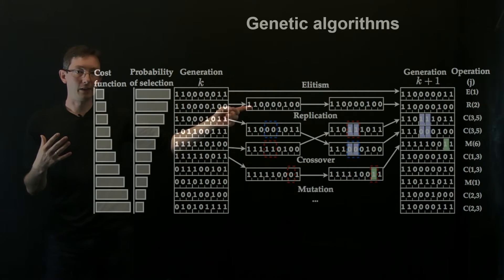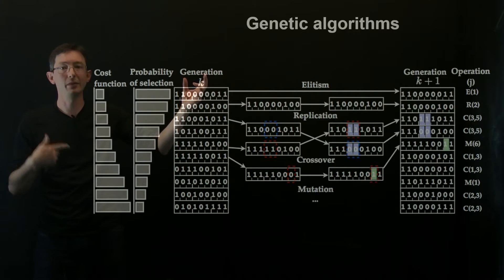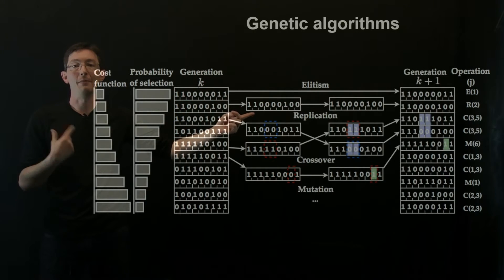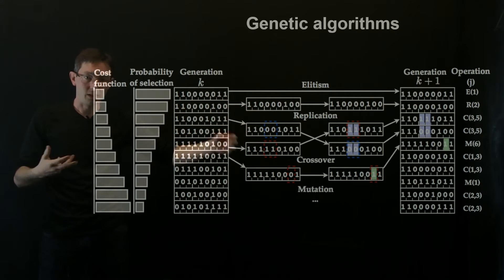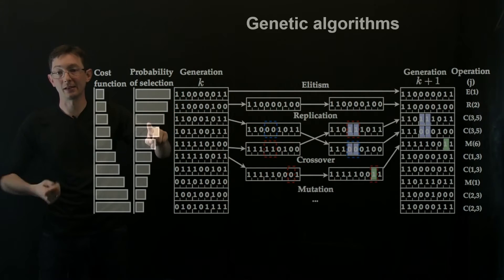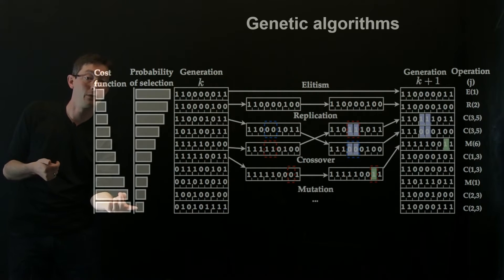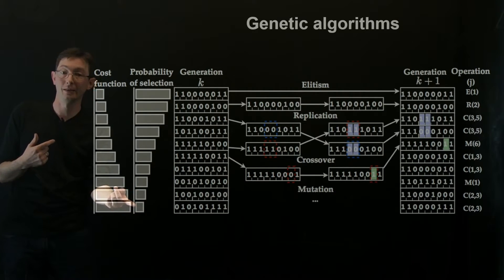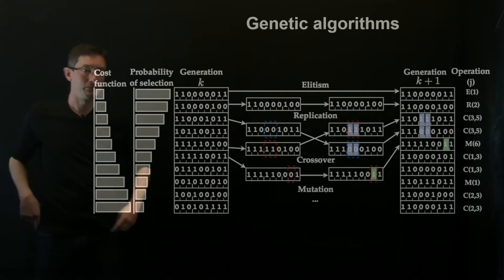The next kind of step we could do is replication. So it's very much like elitism, but it's random. So I may or may not decide to replicate and I may or may not decide to replicate any of these based on a coin flip probability. So however unlikely it is, I might actually replicate this bad one, but it's unlikely.